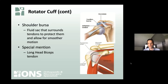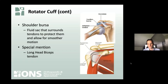In the same vicinity as the rotator cuff and the bursa is the long head biceps tendon. The bicep has the letters 'bi' because there are two heads: the long head biceps and the short head biceps. The long head has a tendon that courses into a groove on the front of the arm bone and attaches somewhere in the shoulder joint — we'll go into that in a little more detail later.